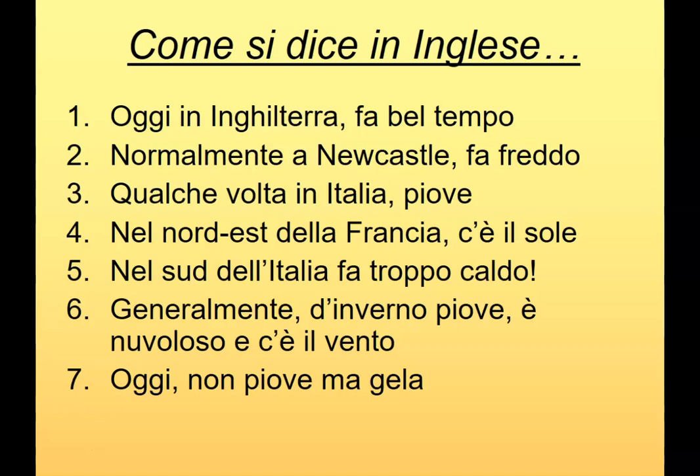Allora le risposte: numero uno — today in England the weather is nice; oggi means today. Numero due — normally in Newcastle it is cold. Tre — sometimes in Italy it rains. Quattro — in the northeast of France it's sunny. Cinque — in the south of Italy it's too hot; troppo means too. Sei — generally in winter it rains, it's cloudy, and it's windy; d'inverno means in winter. Numero sette — today it's not raining but it's freezing. Remember: introduce the negative by putting non in front of your verb — non piove.